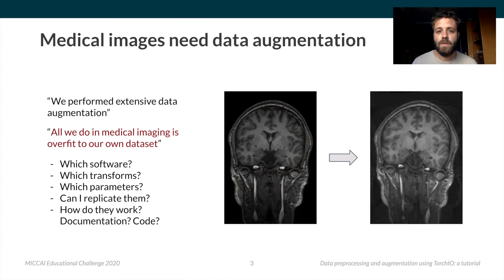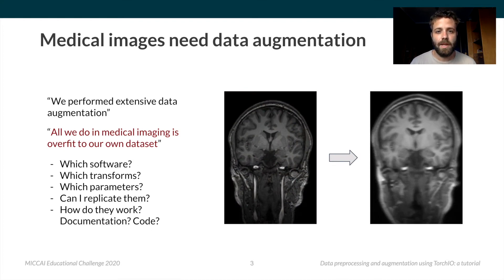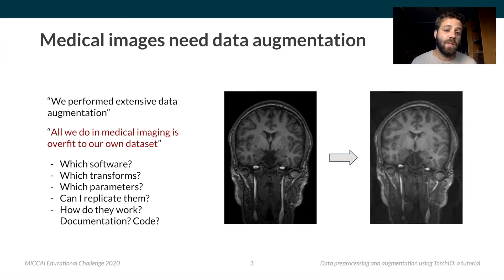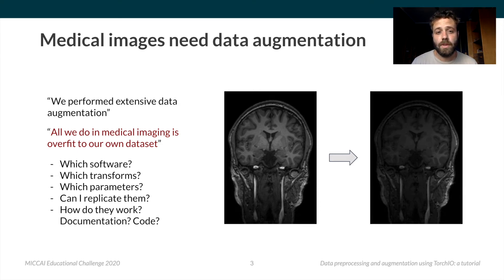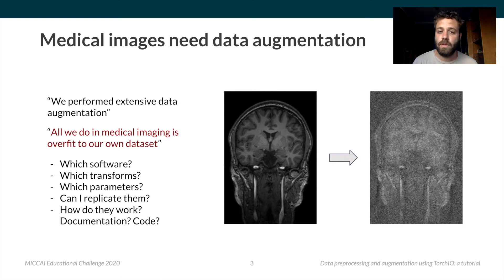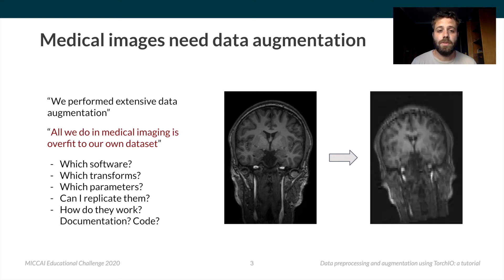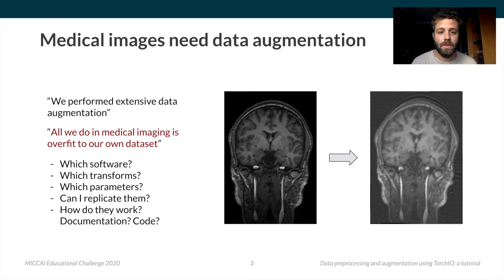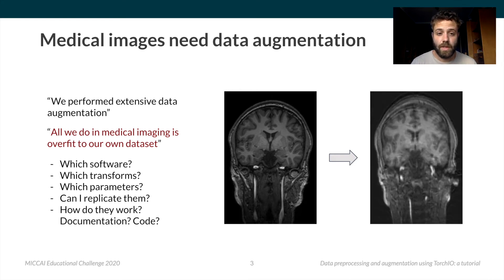Data augmentation is a way to artificially increase the size of a training dataset by applying a certain transform to each data point. In the medical imaging field, datasets are relatively small compared to fields like natural language processing or standard computer vision. This makes it hard for deep learning models to generalize well to unseen data from different distributions, so the need for data augmentation is huge for us.